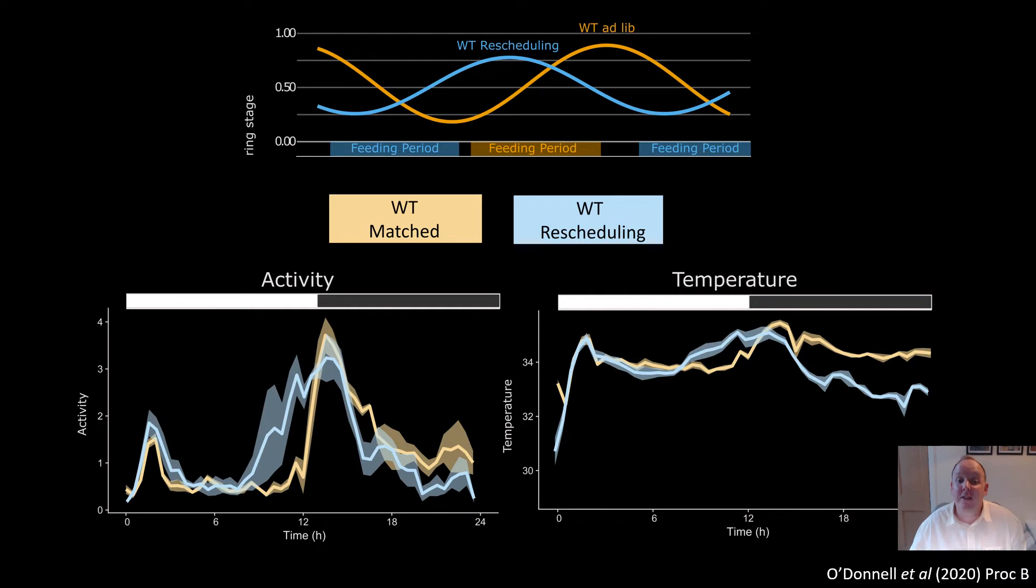While many signs point to feeding, it's important to rule out other obvious signals like host locomotor activity and body temperature. You can see that while activity and temperature were disrupted in the restricted fed wild type in blue, it's not the complete inverse of the matched group in yellow-orange. These can't explain the rhythms we see, so we believe these host signals are simply not as important as feeding to parasite rhythms.